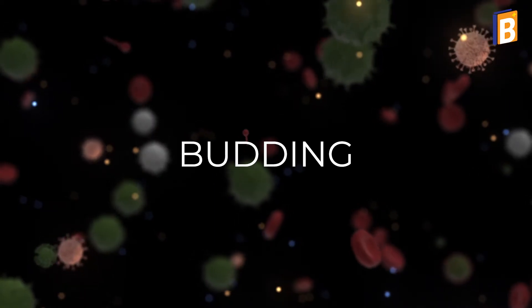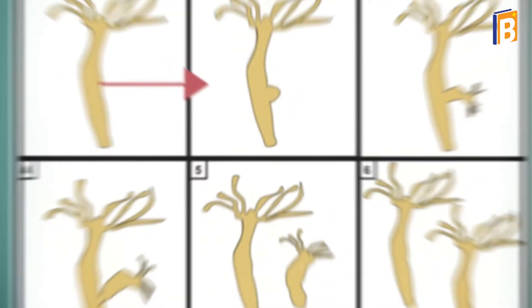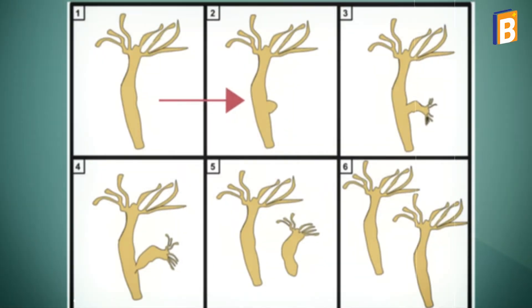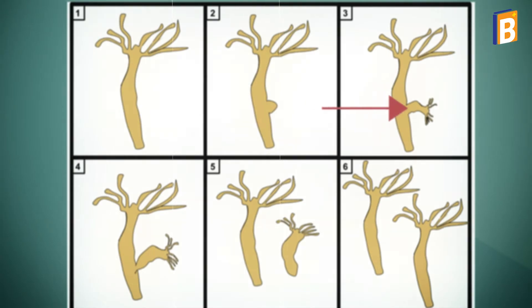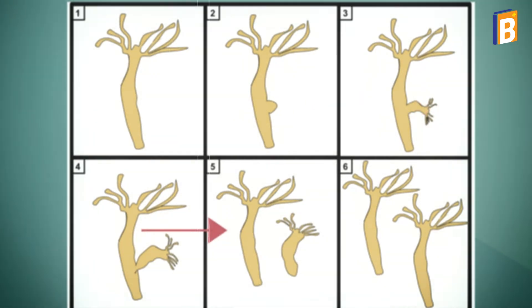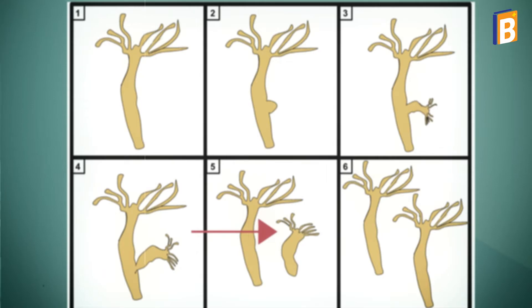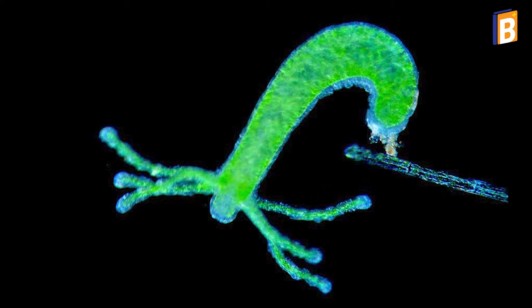Next is budding. A new organism is formed on the parent body in the form of a bud. When it grows and becomes mature, it detaches from the parent body after maturation. For example, Hydra.